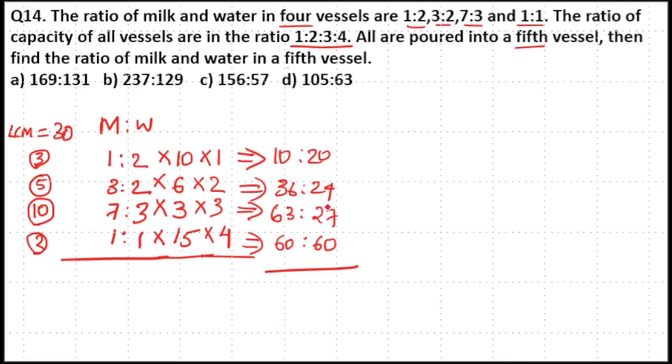Now if you add together all the milk amounts: 10 plus 36 plus 63 plus 60 equals 169.